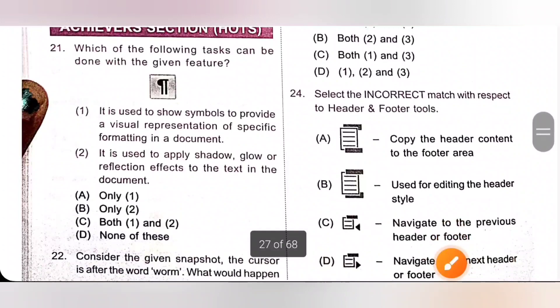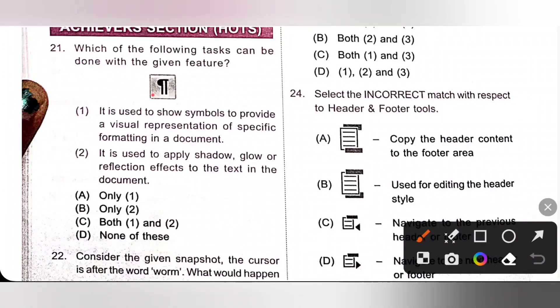Next, achiever section 21: Which of the following tasks can be done with the given feature? It is the paragraph mark. Statement 1: It is used to show symbols to provide a visual representation of specific formatting in a document - it is the correct statement. Statement 2: It is used to apply shadow, glow or reflection effect to the text in the document - it is the incorrect statement. Only option 1, so option A is the correct answer.